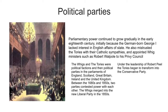Parliamentary power continued to grow gradually in the early 18th century, initially because the German king George I lacked interest in English affairs of state. He also mistrusted the Tories with their Catholic sympathies, and appointed Whig ministers such as Robert Walpole to his Privy Council. Eventually, Walpole became chief minister, leader of the Whig party, and head of the Whig majority in the House of Commons, which was now mainly composed of wealthy land and property owners. Walpole's resulting control of political power enabled him to increase parliamentary influence, and he has been called Britain's first prime minister.